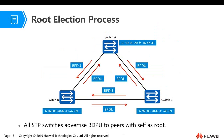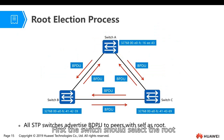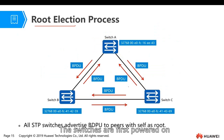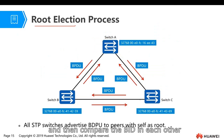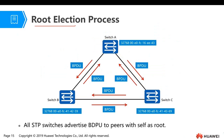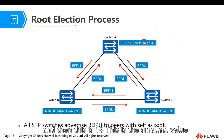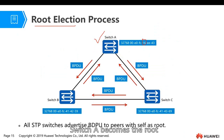The whole STP process: first, the switch should select the root. In the switch network, the switch is powered on, then they negotiate with each other using BPDU, compare the bridge IDs, and choose who has the smallest value. After this exchange, switch A becomes the root. This is how the root bridge is selected.